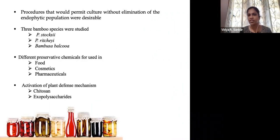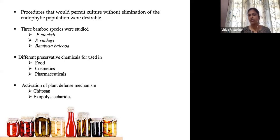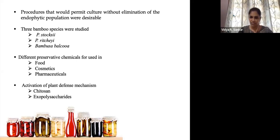From this study, we understood that complete elimination of endophyte bacteria is not desirable. So we selected these bamboo species, stocksii, ritchiei, and Bambusa balcooa, and elucidated certain protocols for controlling latent contamination using eco-friendly methods. For that, we selected chemicals that come under the category of GRAS, that is Generally Recognized As Safe. Most of these chemicals are commonly used in our day-to-day life as preservatives in food, cosmetics, and pharmaceuticals. We also activated the plant defense mechanisms, since plants have a mechanism for resisting invasion by micro-organisms.